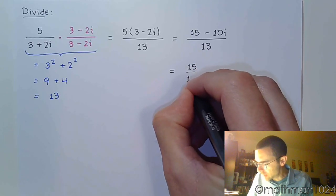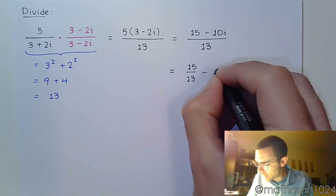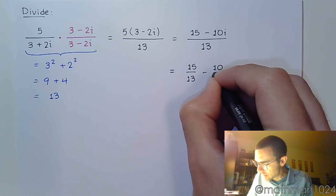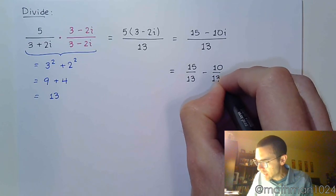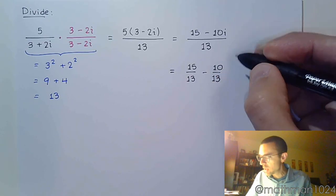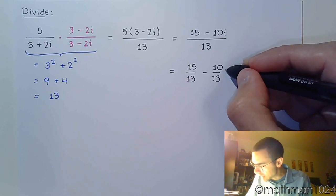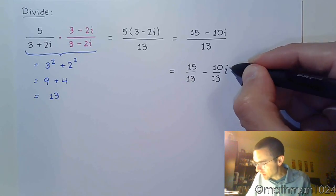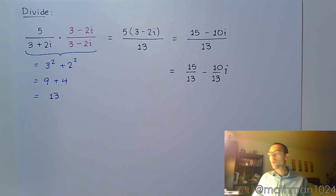We have 15 over 13 minus 10 over 13. You can put the i next to the 10. Don't put it next to the 13. I typically will do this. I'll put it right next to that fraction part. That way, you really see that the imaginary part is the fraction negative 10 over 13.